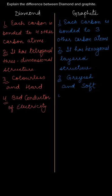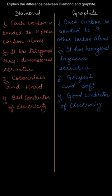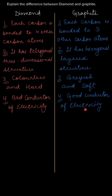Diamond is a bad conductor of electricity, whereas graphite is a good conductor of electricity. This is due to the fact that in diamond there are no free electrons to move, so it does not conduct electricity. In graphite, there are free electrons moving between the layers of the structure, which is why it conducts electricity.